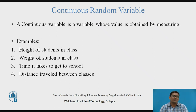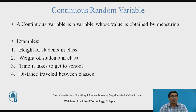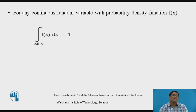A continuous random variable is a variable whose value is obtained by measuring. Examples include: height of a student in a class, weight of a student in a class, time it takes to get to school, and distance traveled between classes. These are continuous random variables obtained by measuring, unlike discrete random variables which are obtained by counting.